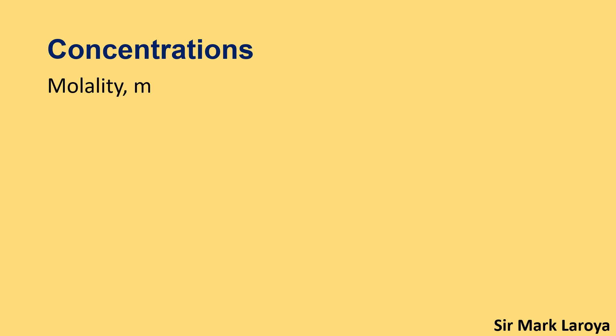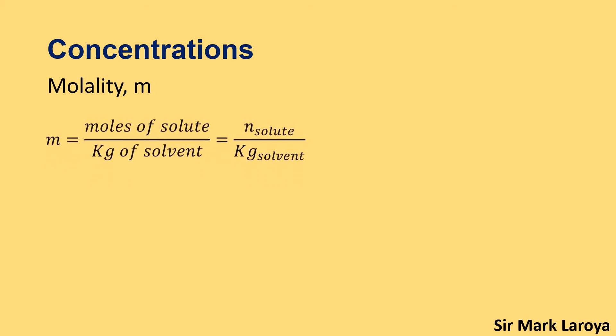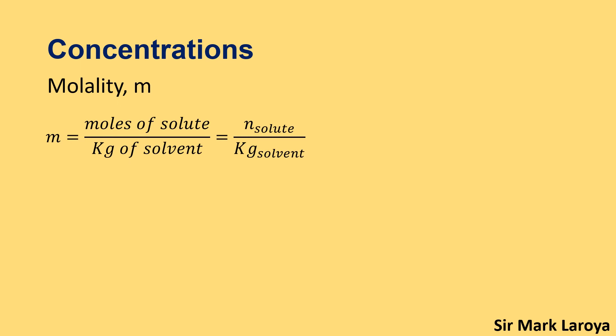Another way of expressing the concentration of a solution is through the use of molality. Molality is denoted by small m. The formula for molality is the number of moles of solute per kilogram of solvent. Take note: it is the number of moles of solute per kilogram of solvent — not per kilogram of solution. Let us now use this formula in solving a problem.